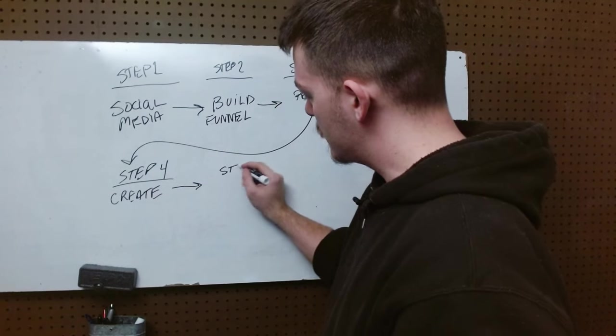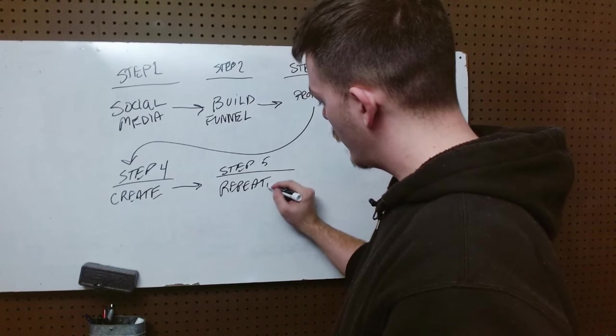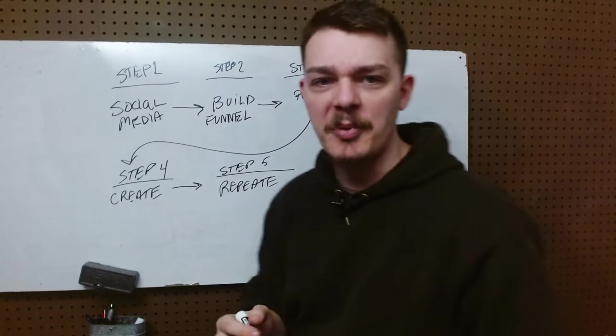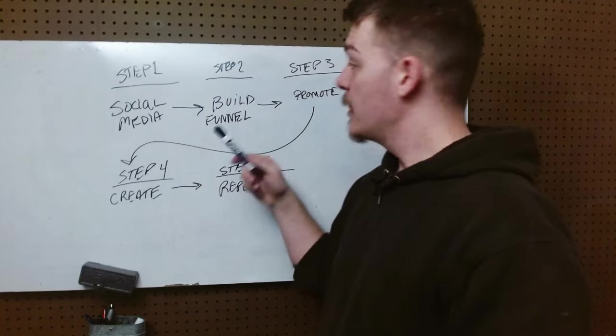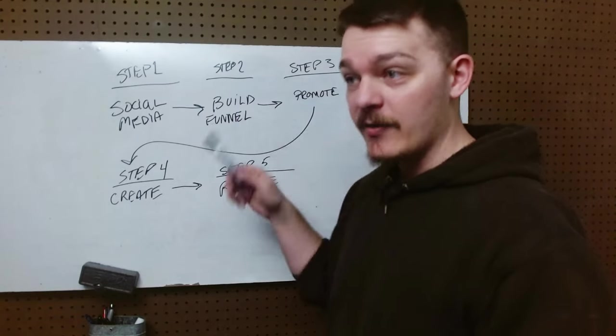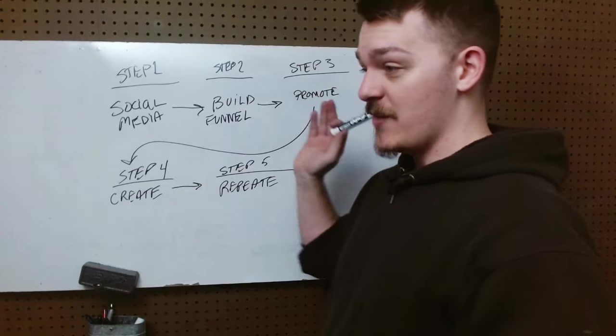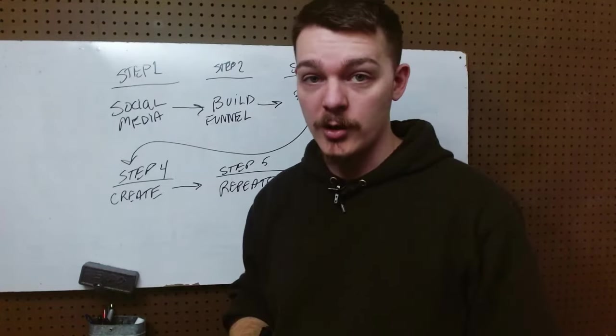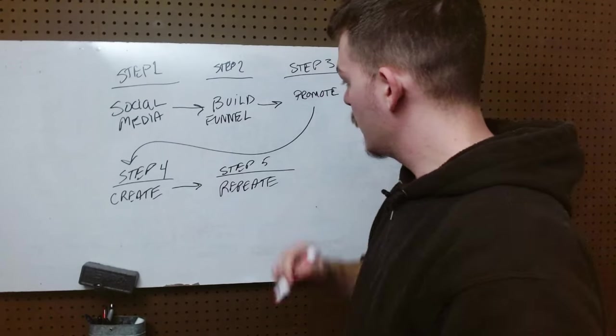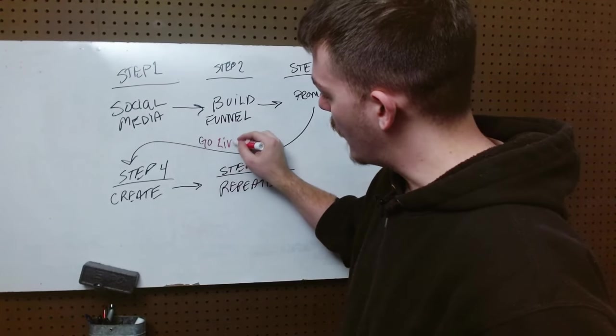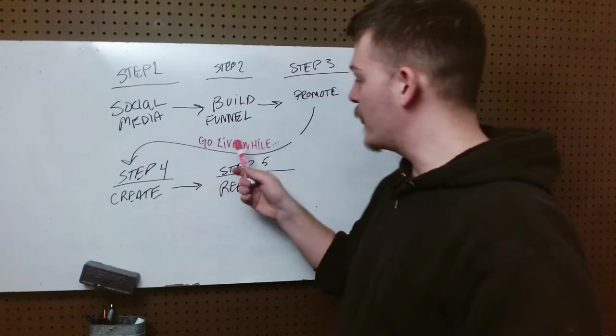And then step five is repeat. So step one, social media. Step two, build out the funnel. Step three, promote the funnel. You're going to go live. You're going to make an ad quick if you're really good at ads and you like doing ads, you can do that. If you're just posting on social media, that's great. If you want to go yell it down at the corner, fantastic. Then you're going to create it. And here's the kicker. Here's the secret. Go live while you create.